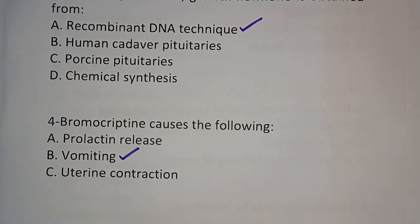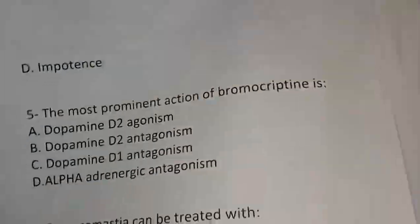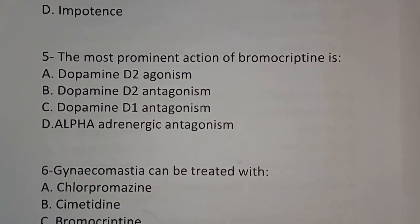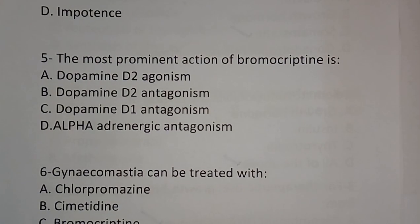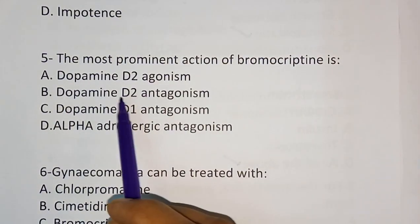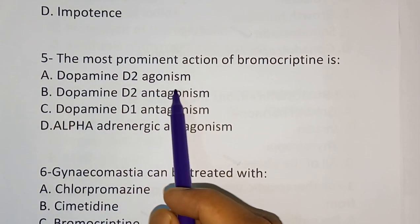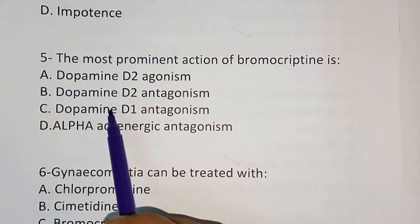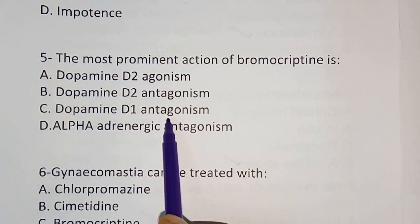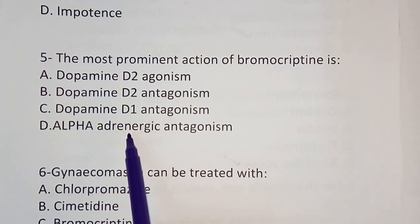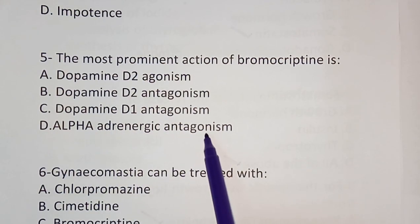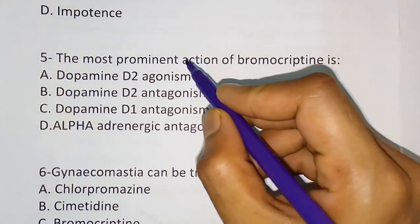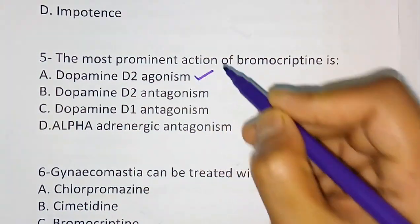Question number five: The most prominent action of bromocriptine is — options are dopamine D2 agonism, dopamine D2 antagonism, dopamine D1 antagonism, or alpha-adrenergic antagonism. The correct answer is dopamine D2 agonism.